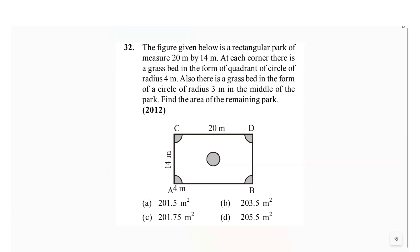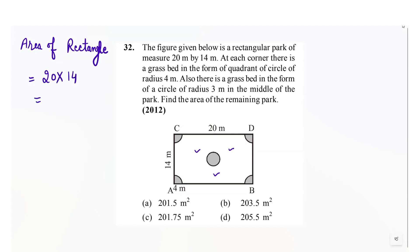In this question, we have to find out the remaining area — that means we have to calculate the area of the shaded region within the rectangle and subtract that from the total area of the rectangle. So let's find out first the area of a rectangle, which is 20 times 14, equals to 280 meter square.